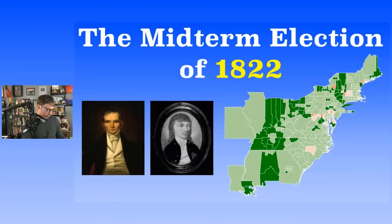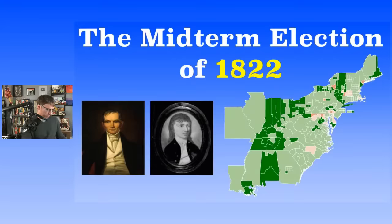1824 was another insane presidential election. You had four candidates — that was the one where John Quincy Adams won, but lots of shenanigans probably went down. Remember, the House of Representatives actually chose the president, and who had the overwhelming majority in the House? Democratic-Republicans.